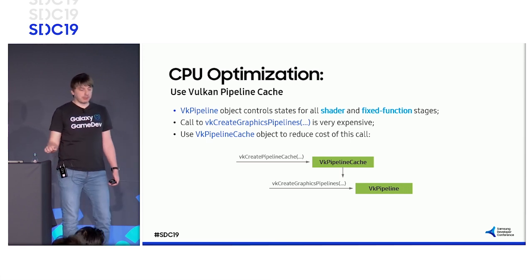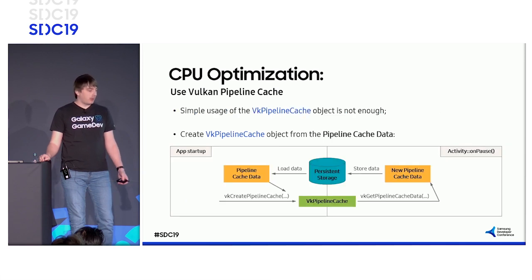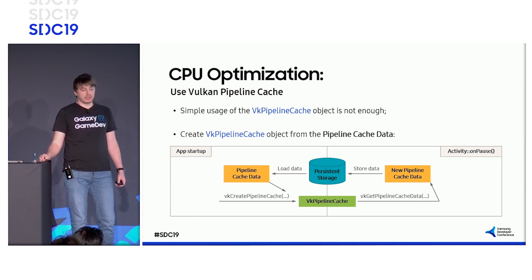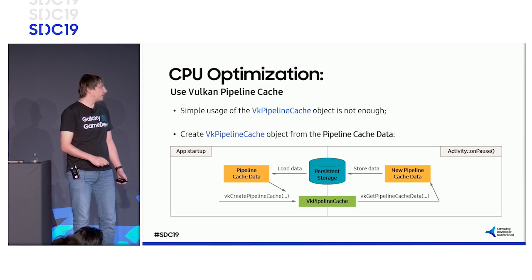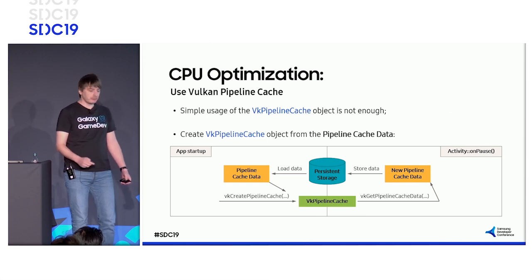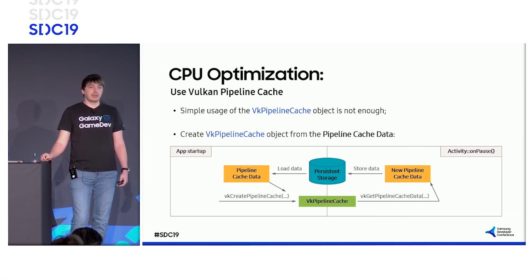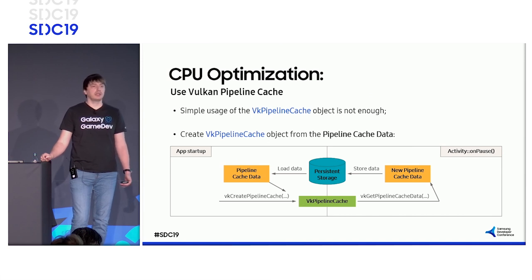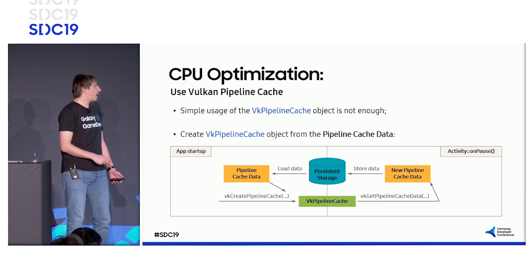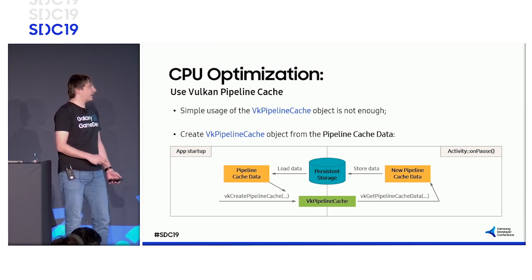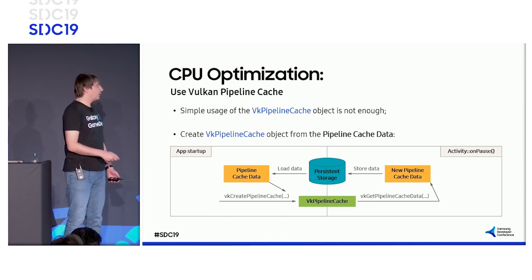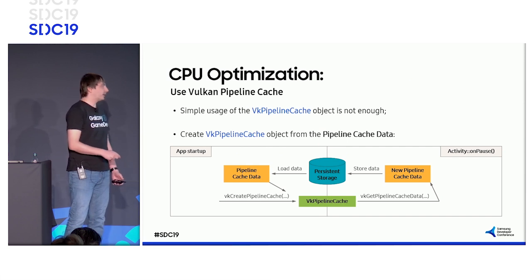Just using an empty cache is not enough because it doesn't help for the first run. When the application runs and uses the pipeline cache, it generates new cache data. It then stores this data in persistent storage. Because this action requires I/O operations, it is better to do this in the Android activity onPause callback to avoid stuttering. Finally, at application startup, load this data from storage and use it to create the cache. By performing this cycle, you'll always have optimal pipeline cache performance.